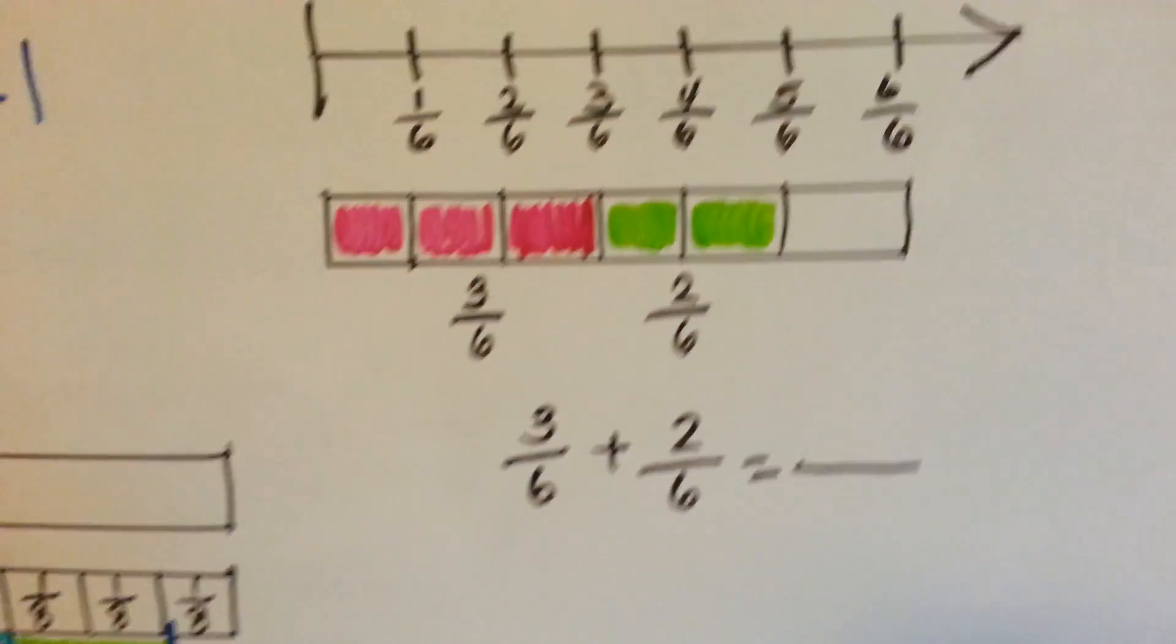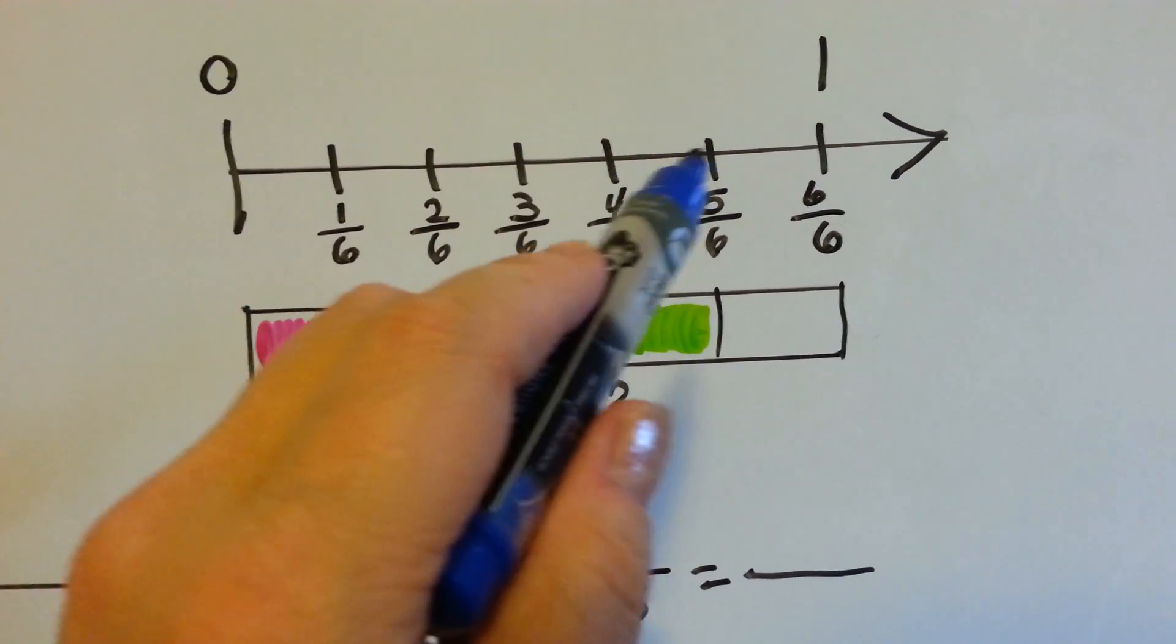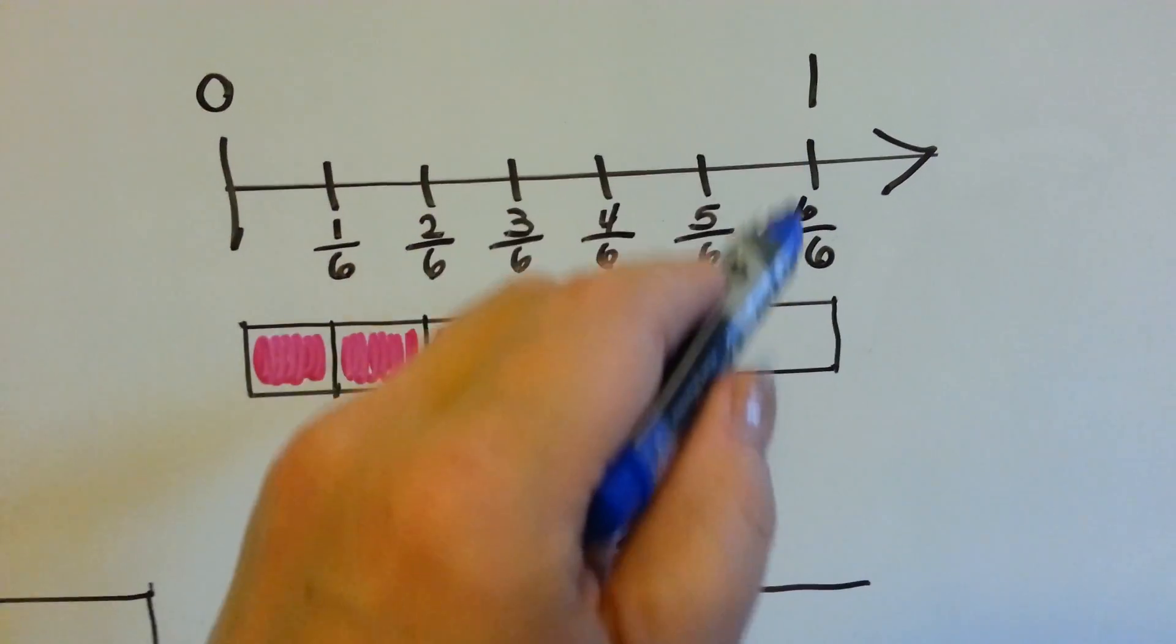I got one last one. We got a number line. 1 sixth, 2 sixths, 3 sixths, 4 sixths, 5 sixths, 6 sixths, which is one whole one.